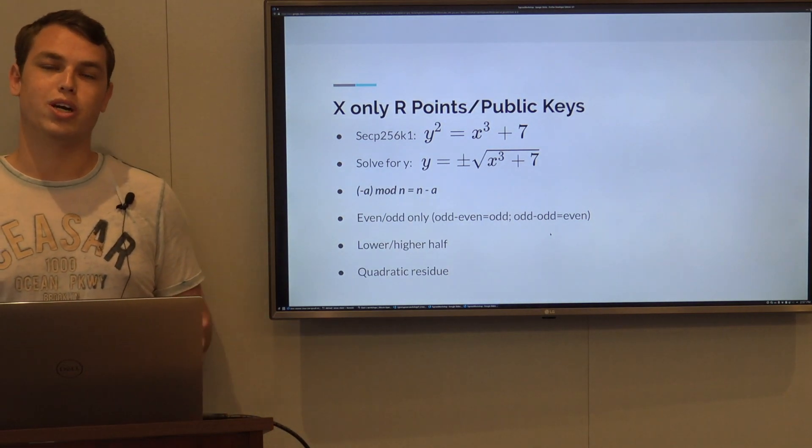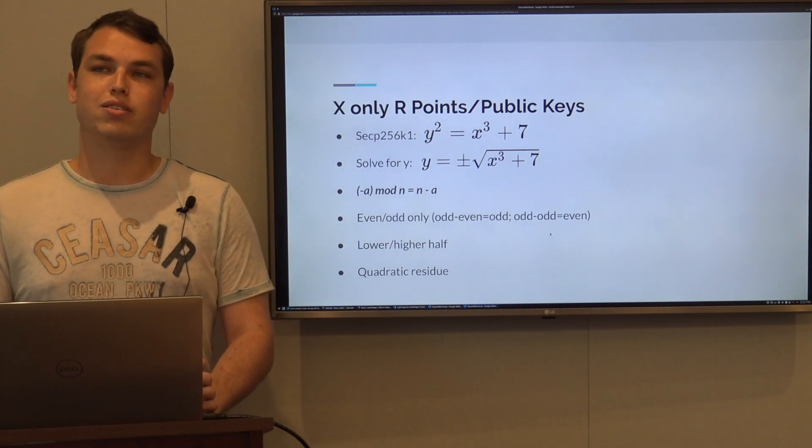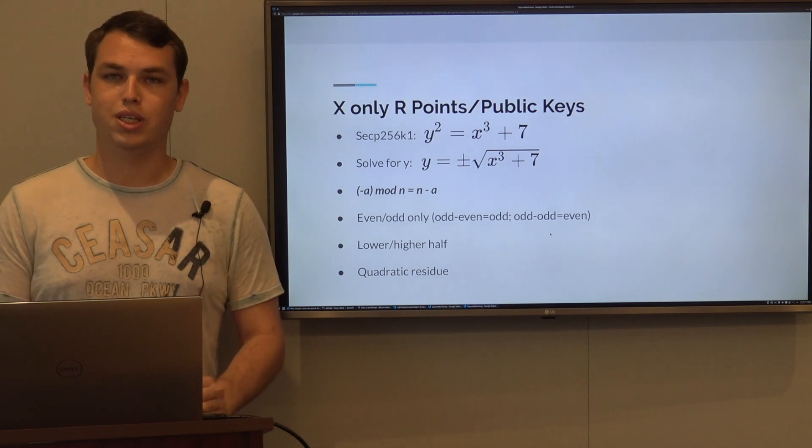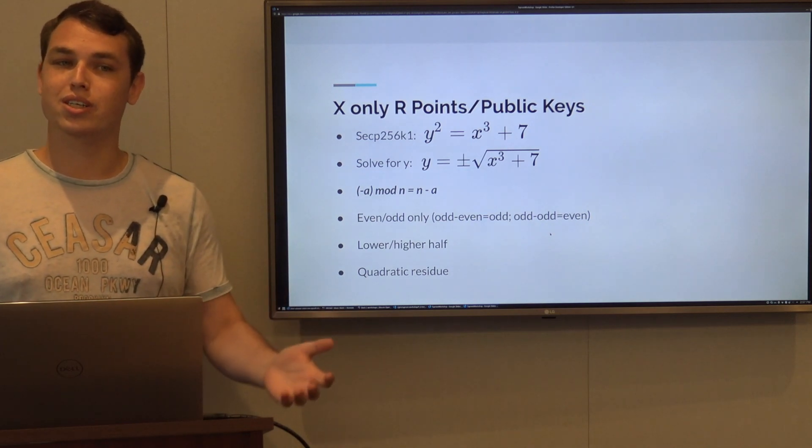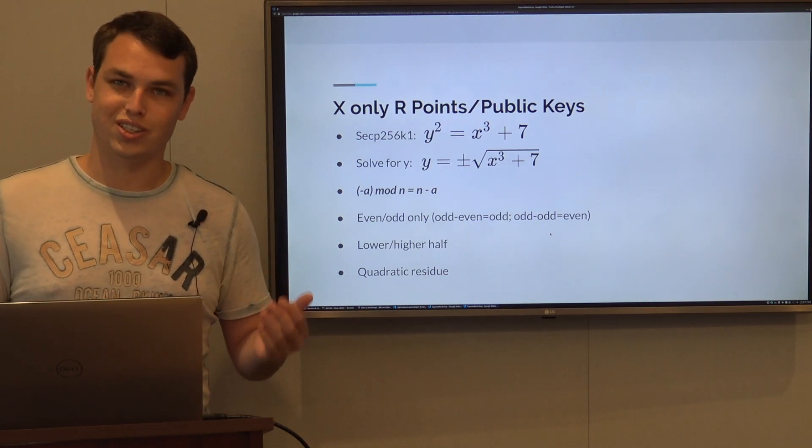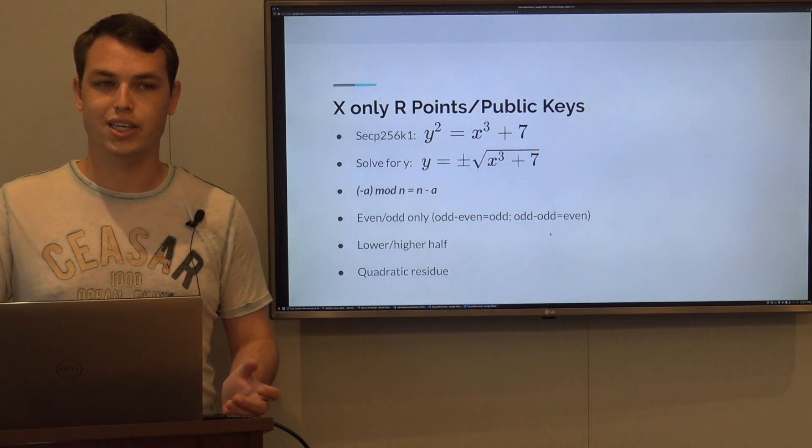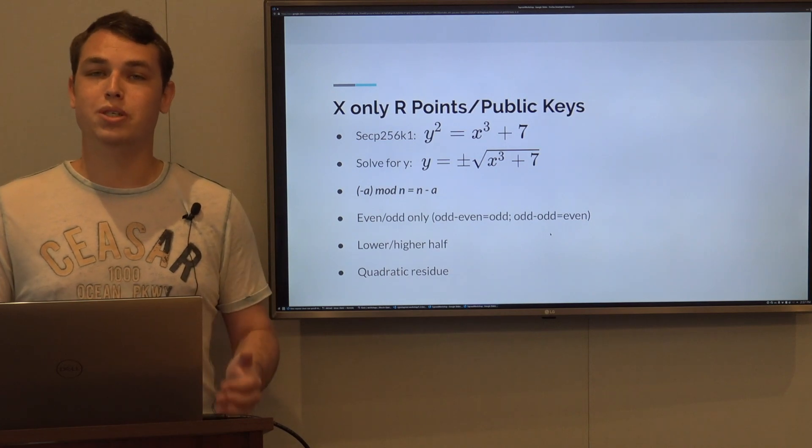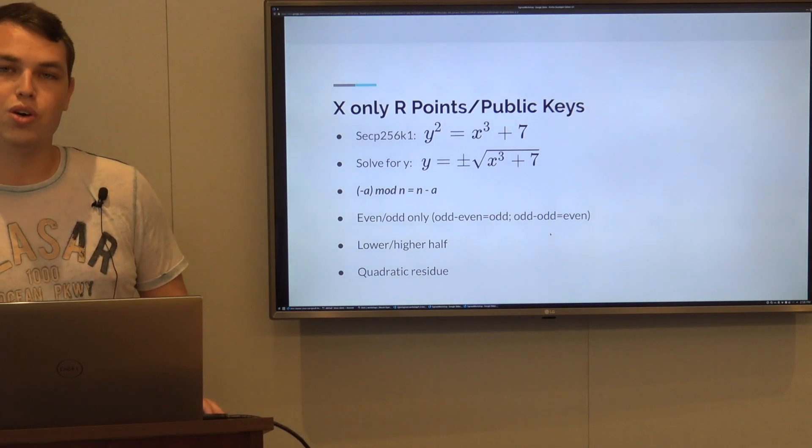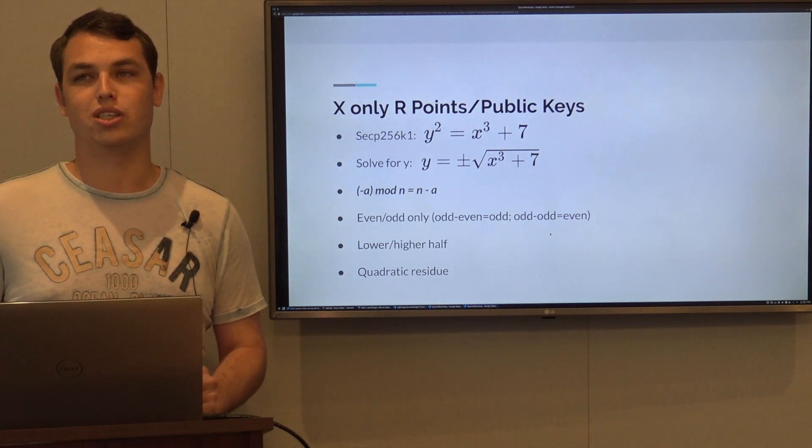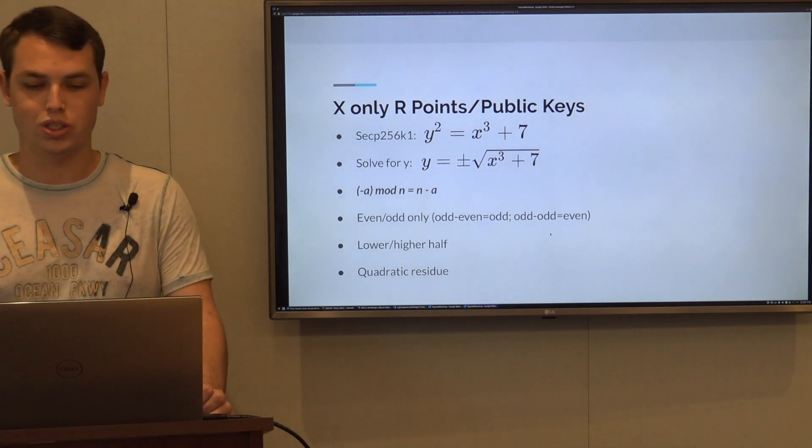A third option which is a bit more complicated is called quadratic residue. Quadratic residue means that there is a solution for the square root - meaning that if you square root the y you actually get a solution. For example in integers, 49 has the solution 7, but 60 has no full square root. Quadratic residue means we are limiting to only y's that have a square root. In practice, we will actually use that way because it's way more performant and this gives us faster verification times, which is pretty great.